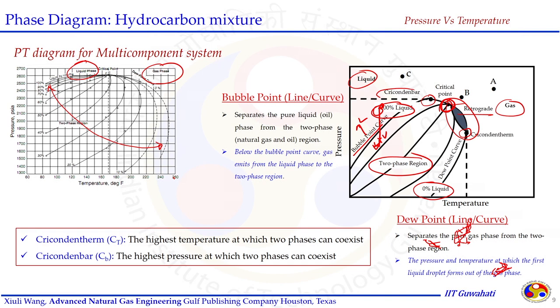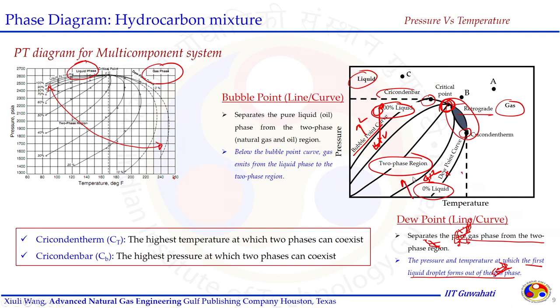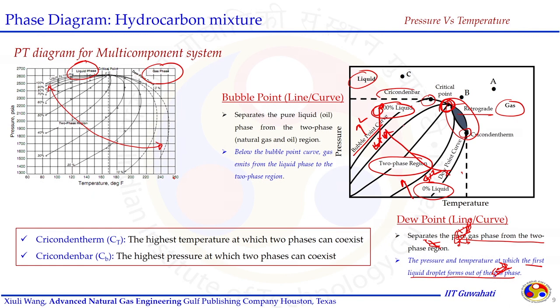On the dew point curve, which separates the pure gas phase from the two-phase region: when we have only gas and then gas plus liquid. The pressure and temperature at which the first liquid droplets form out of the gas phase — that is represented by the dew point curve. As we enter inside the envelope, the percent of liquid loading varies. Going from the dew point curve toward the bubble point curve, the percent of liquid keeps increasing. When we meet the bubble point curve conditions, almost every gas component becomes liquid, and beyond the bubble point curve it is only liquid phase.